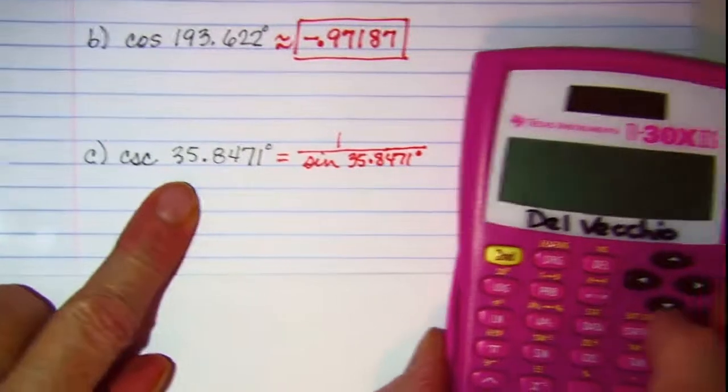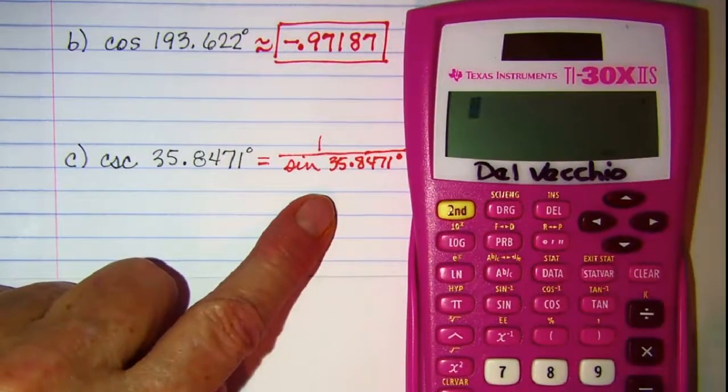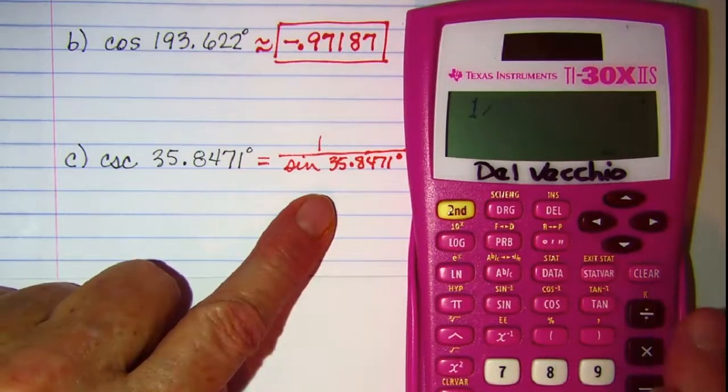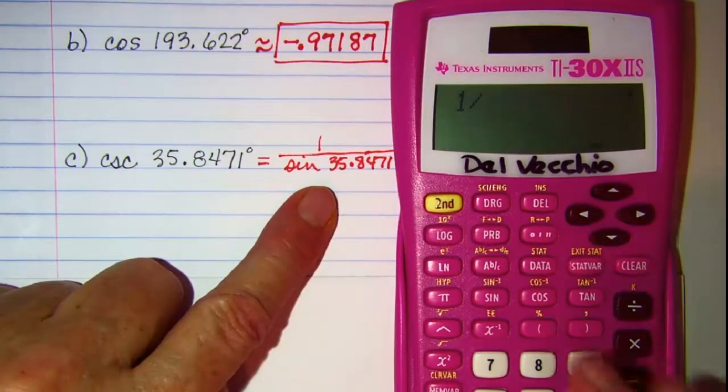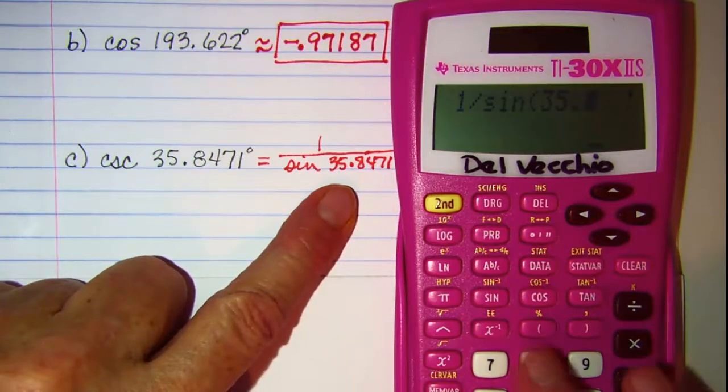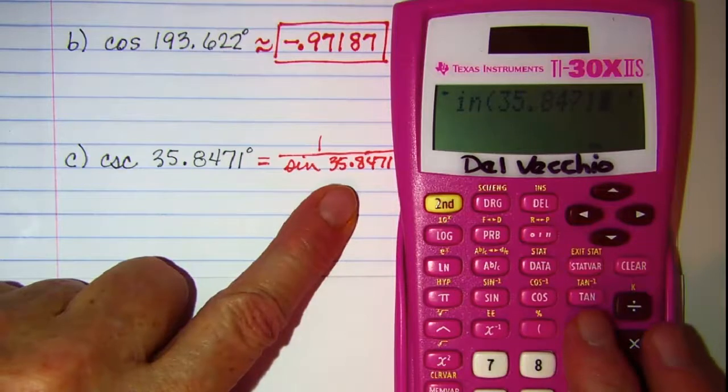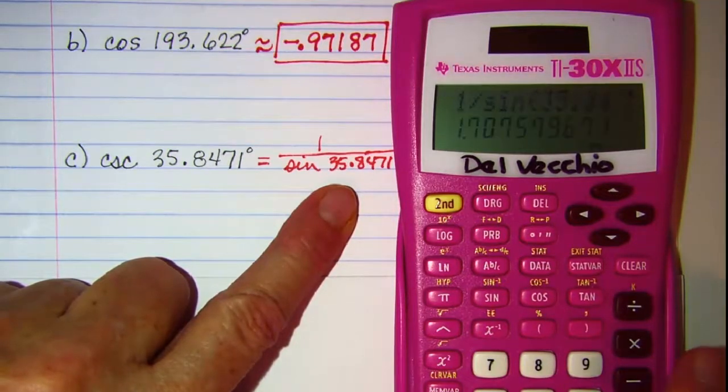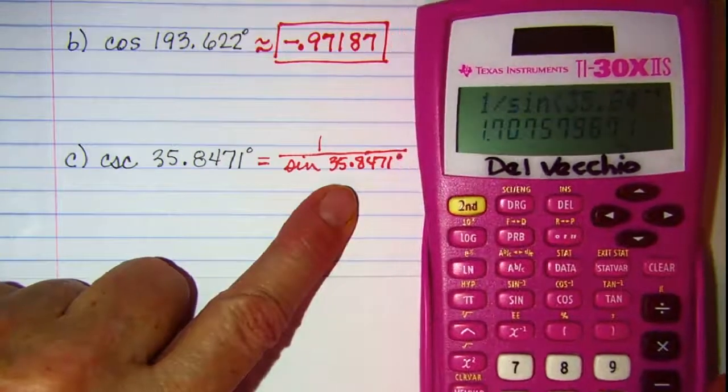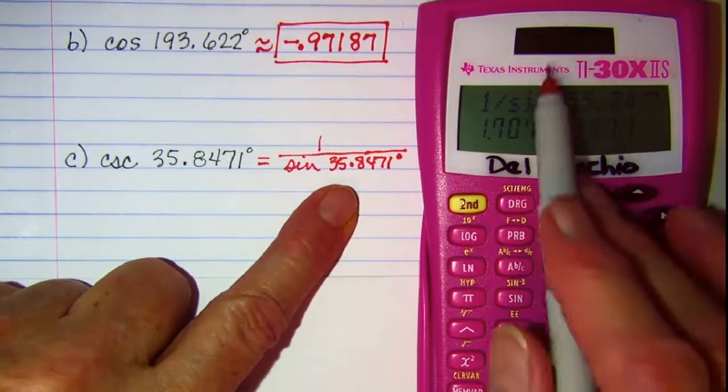So now on my calculator, I can do 1 divided by, 1 divided by, and then my sine 35.8471, and then close the argument. This is 1.70758.